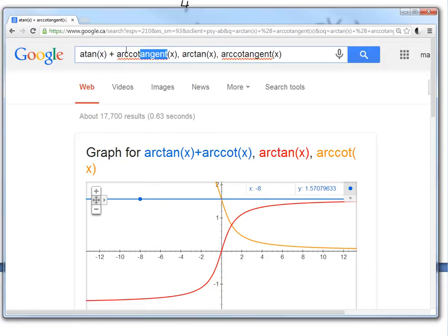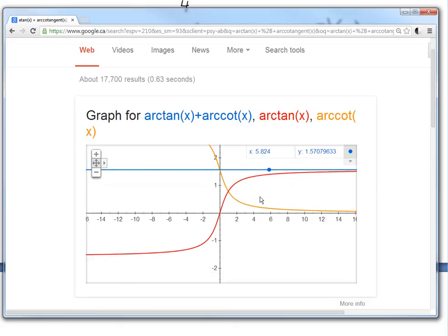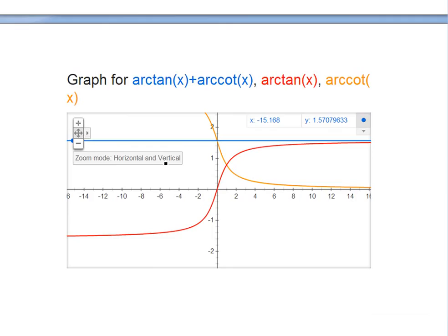As you can see here, the addition—this is our identity, arctan(x) plus arccot(x). This is the blue one here, and as you can see it equals 1.57, which is π/2. The arccot is the yellow one going down like this, and the red one is the arctan going like this. The addition of them always is a flat horizontal line, which is π/2.